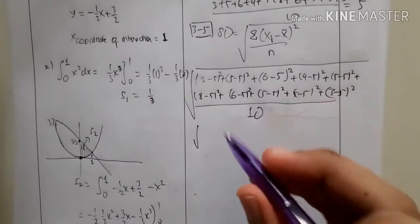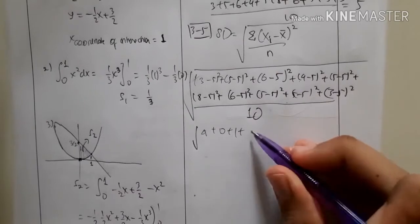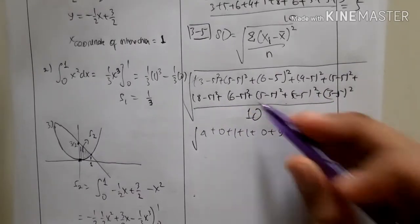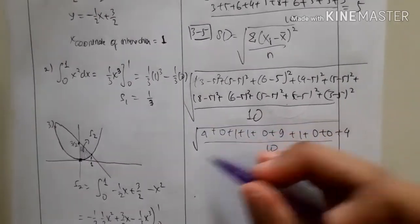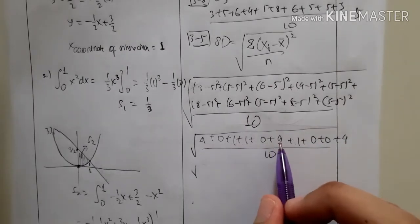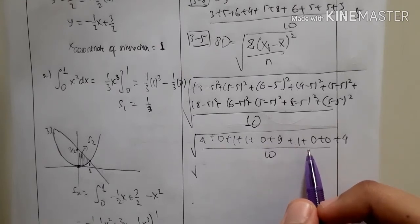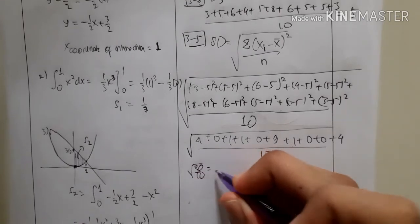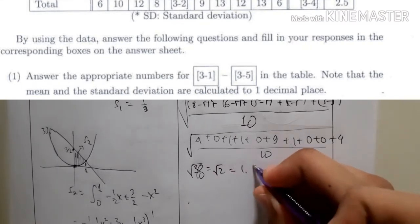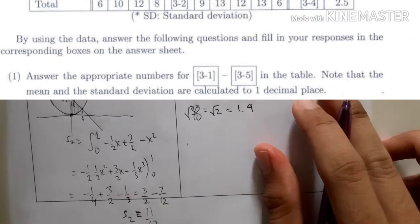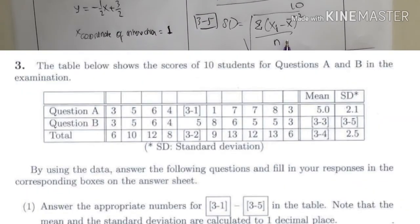Calculating: 4 + 0 + 1 + 1 + 0 + 9 + 1 + 0 + 0 + 4 = 20, divided by 10 = 2. The square root of 2, calculated to one decimal place, is approximately 1.4. That is how you use the standard deviation formula.